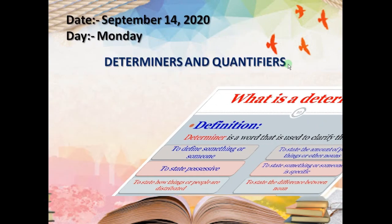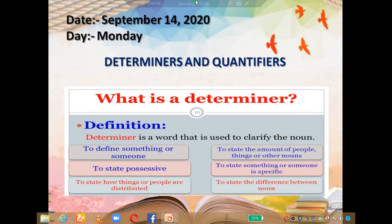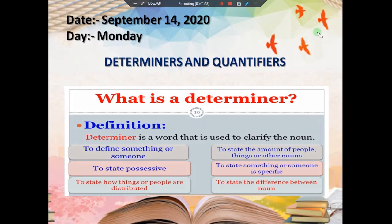Today we are going to start Determiners and Quantifiers. What is a determiner? A determiner is a word that is used to clarify the noun. It is used to define something or someone. These six points you have to keep in mind: to define something or someone, to state possessive — meaning ownership — like 'my book,' 'your pencil,' 'her frog,' and so on.